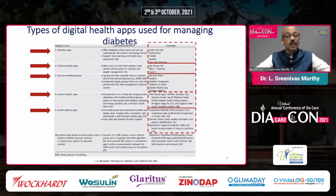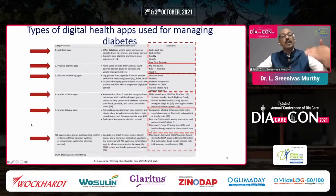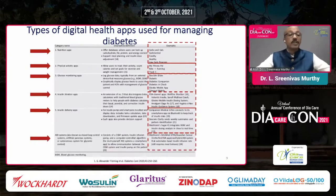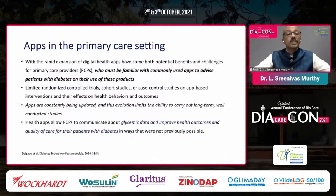Closed-loop control systems — artificial pancreas devices like Medtronics MiniMed 670G — are also clearly available. These represent various segments in diabetes management currently available, and most of these are free of cost.